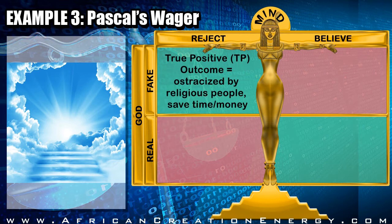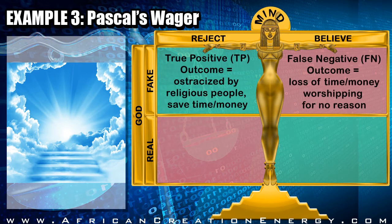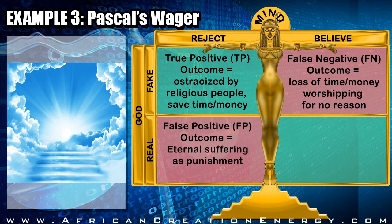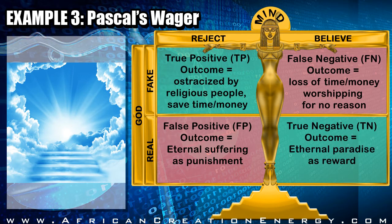The outcome for rejecting God when God does not exist is being ostracized by religious people in society, but also saving the time and money you would have spent worshiping a God that does not exist. If God does not exist and you believe in God, then you are wrong, and the outcome is the loss of time and money spent worshiping something that does not exist. If God exists and you reject the existence of God, then you are wrong, and the outcome is eternal suffering as punishment by God. However, if God exists and you believe in God, then you are right, and the outcome is eternal blessings as your reward.